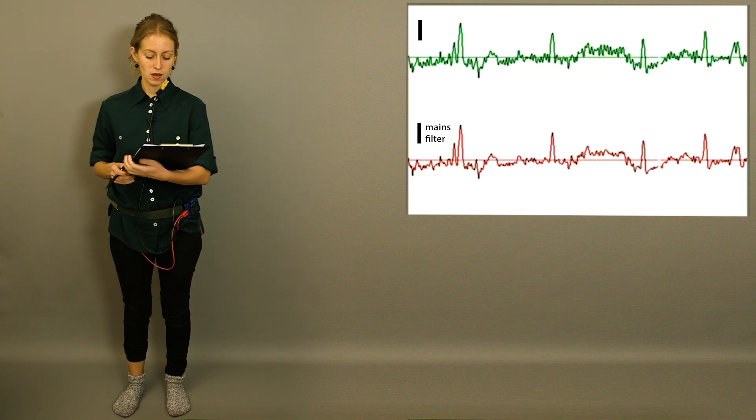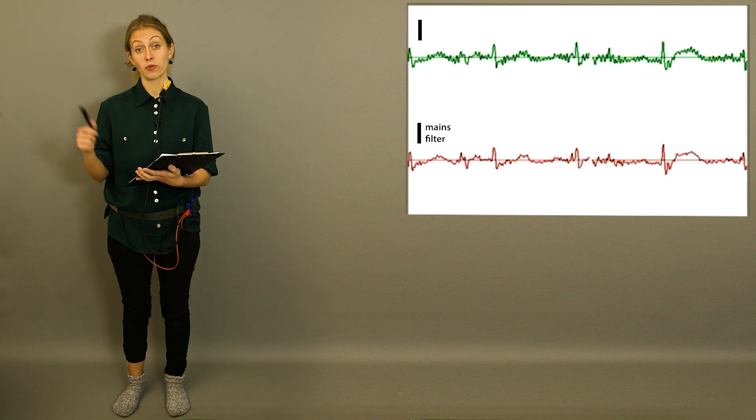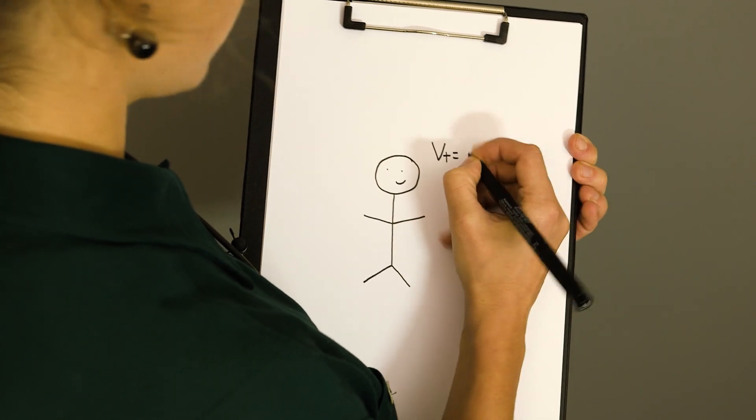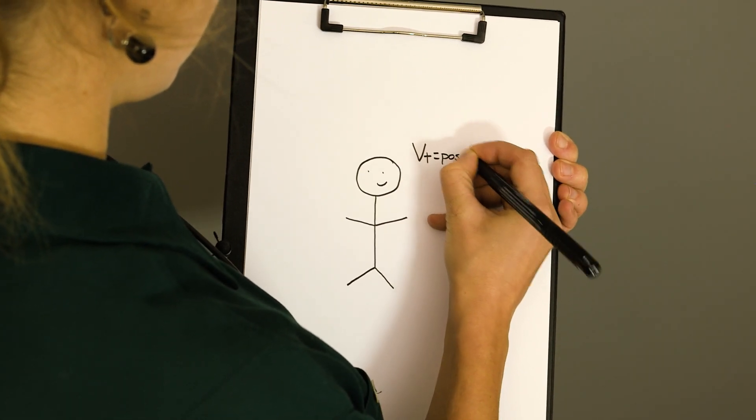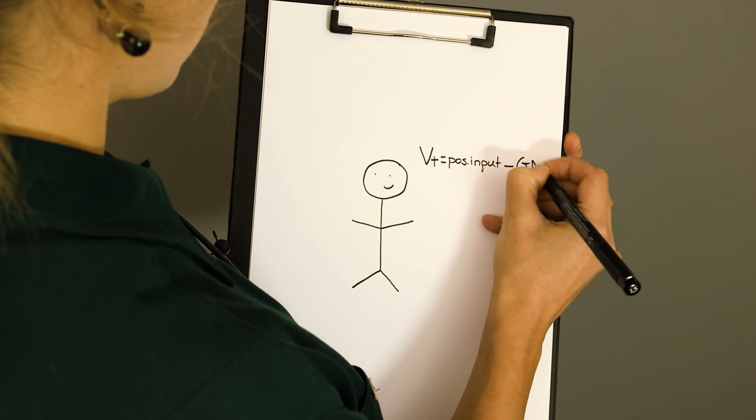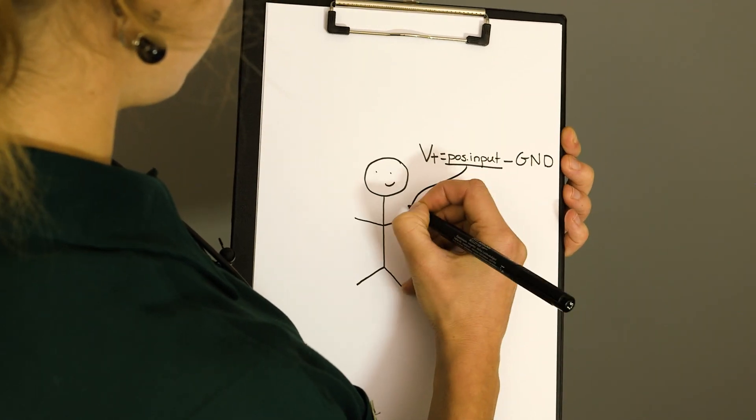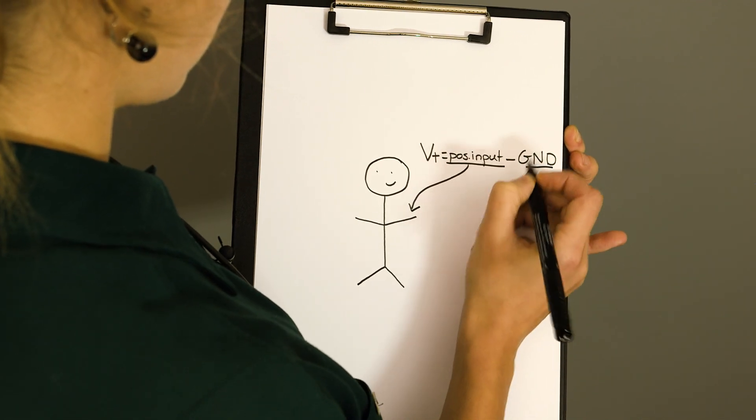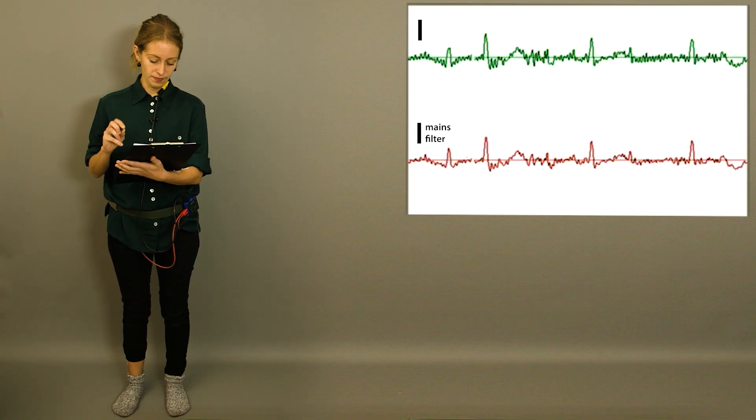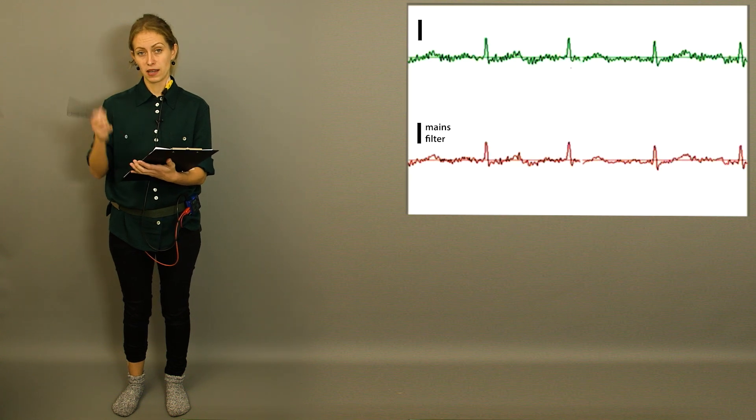We'll take the first signal from my left shoulder and this is going to be the difference between a positive input and ground. The second signal is going to come from my right shoulder and that's going to be the difference between the negative input and ground.